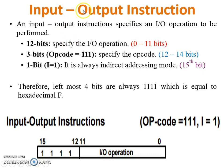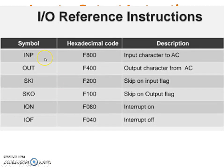Next, Input-Output Instruction. An input-output instruction specifies an input-output operation to be performed on a register. The first 12 bits, 0 to 11, specify the input-output operation. The 3-bit opcode is equal to 1, 1, 1, specifying the particular opcode. The last bit, bit 15, i, is always 1, meaning it is always indirect addressing mode. So the leftmost 4 bits are always 1, 1, 1, 1. The instruction set includes: input character to accumulator, output character from accumulator, skip on input flag, skip on output flag, interrupt on, and interrupt off. This is the hex code for all these instructions.